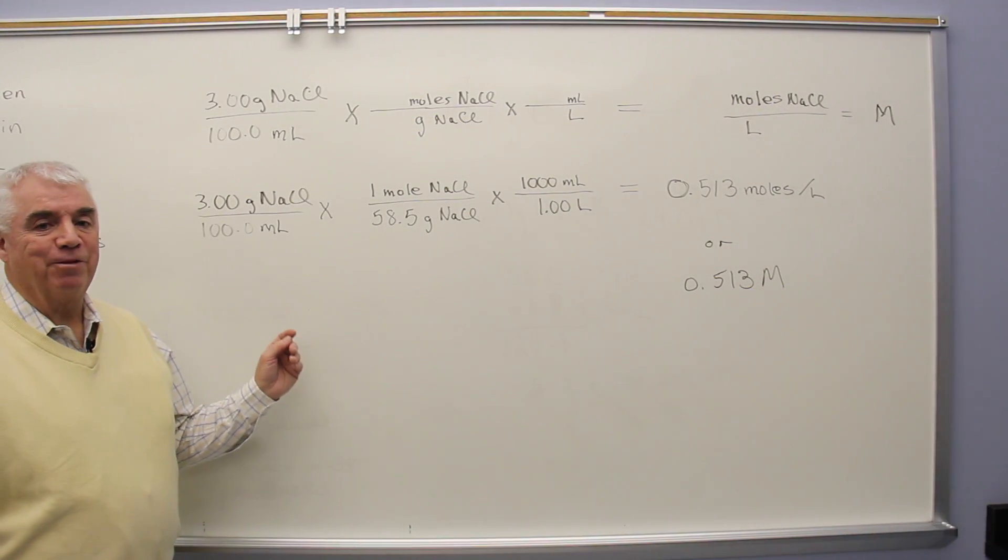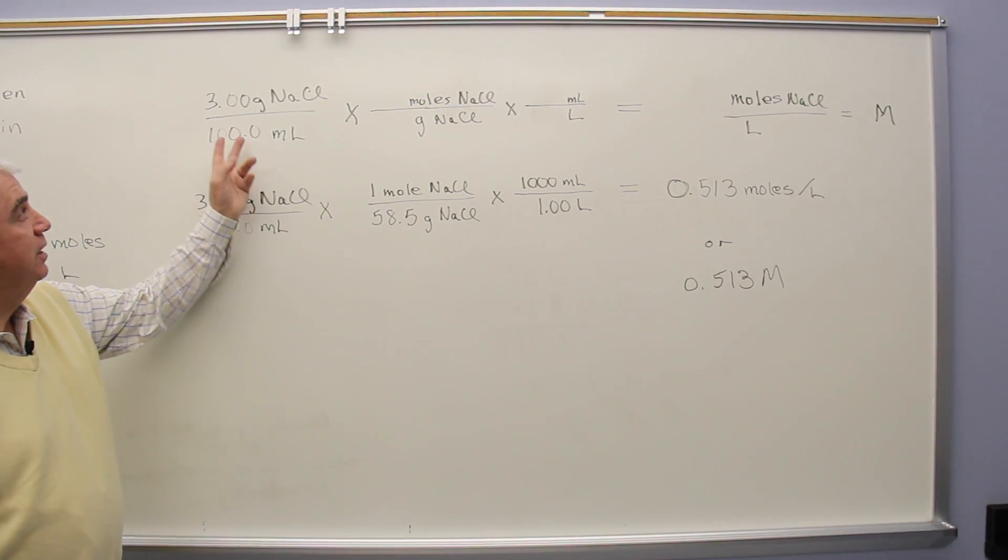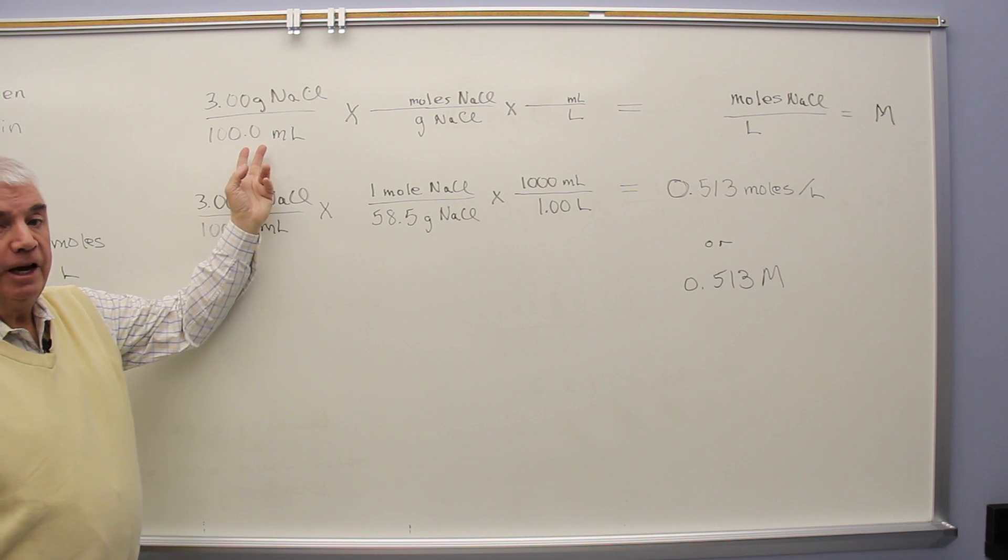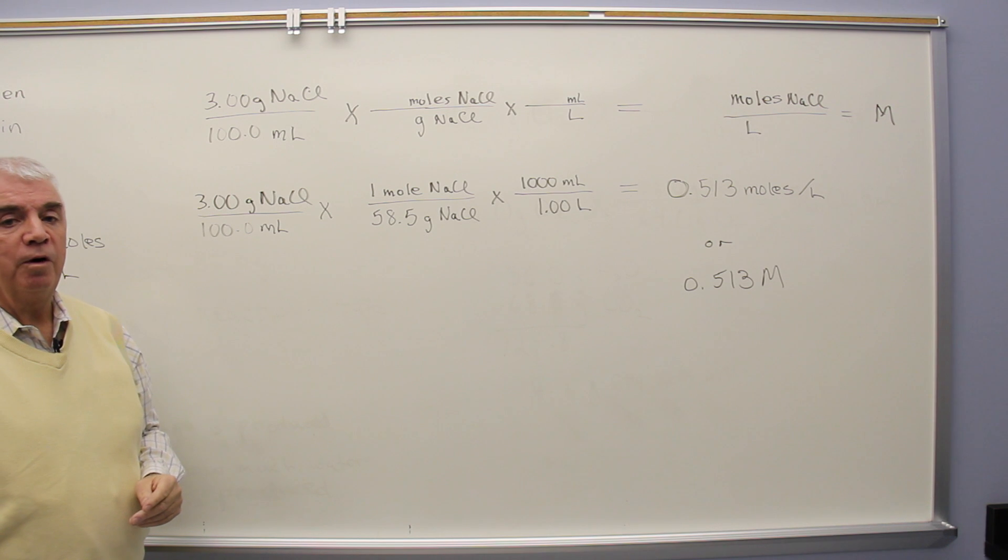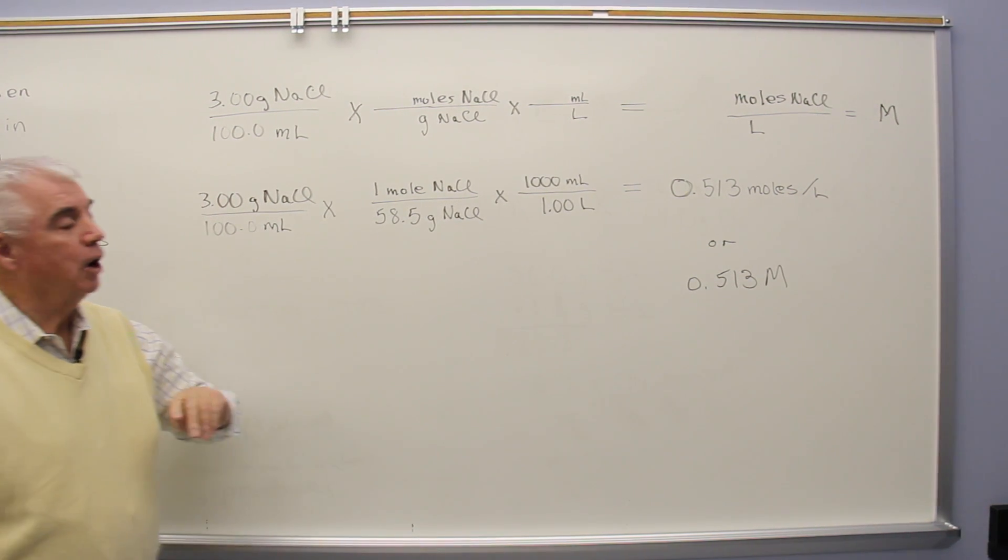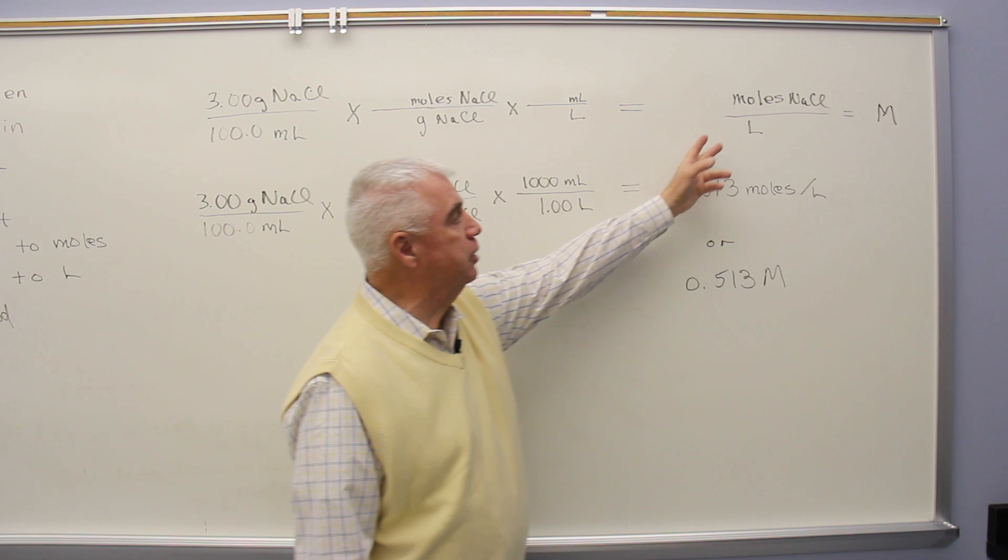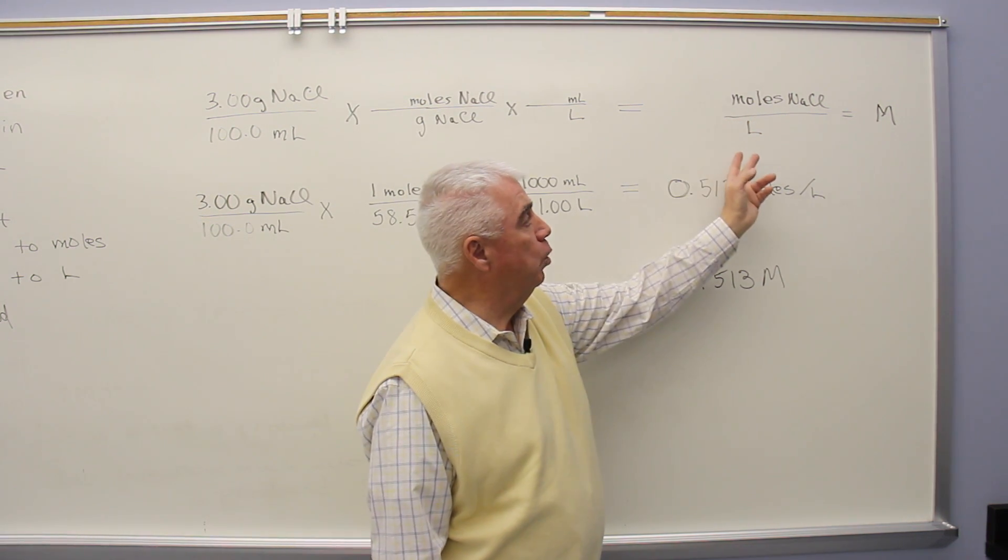Let's look at the factor unit method. In the factor unit method, you know there are three steps. In the first step, we'd write down the numbers that are given and the units. And this time, I've arranged what we've been given in fractional form because what we're after is also in fractional form.